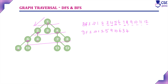From 4, visit next level unvisited vertices 7 and 8 — visit 7 first. From 7, visit 11 and 12 — visit 11 first. From 11, no deeper node, go back to 7. Visit 12. From 12, no deeper node, go back to 7. From 7, no unvisited vertices, go back to 4. Visit 8. From 8, no deeper node, go back to 4. From 4, all vertices visited, go back to 1. From 1, no unvisited vertices — algorithm complete. DFS order: 1, 2, 5, 9, 10, 6, 3, 4, 7, 11, 12, 8.